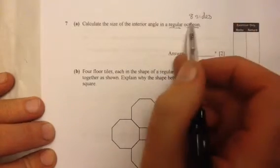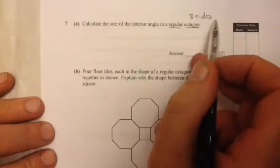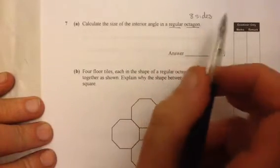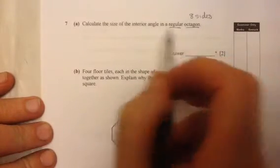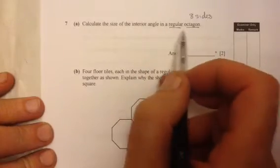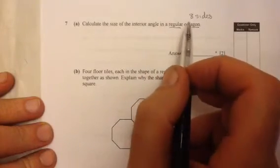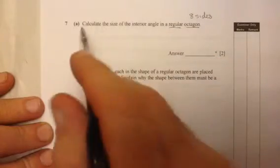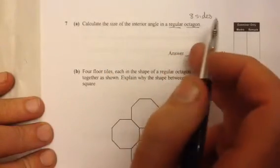And because it's regular, all the interior and all the exterior angles are the same. The way I like to work this out is I like to work out the exterior angle with regular shapes, because I know all regular shapes, actually all shapes, the exterior angles add up to 360.